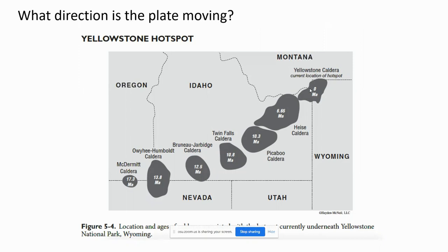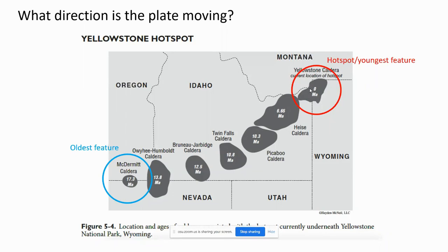If we want to figure out what direction the plate is moving, we look at where the hotspot is currently located by finding the youngest feature — the current Yellowstone caldera. The oldest feature is the McDermott caldera, created 17.3 million years ago from the same hotspot. That means when it formed, it would have been located where the Yellowstone caldera is today, and it has since moved to its current location.